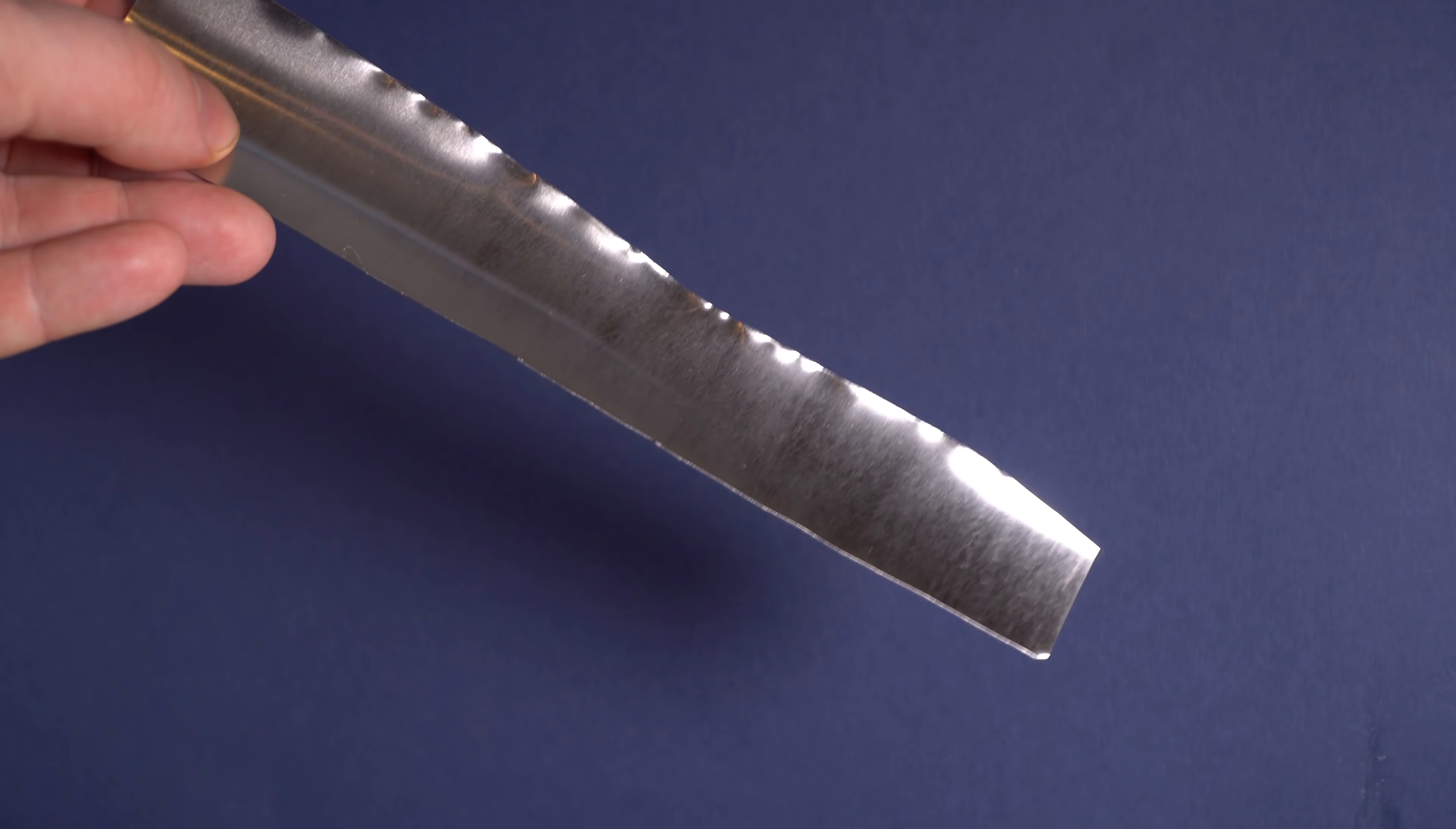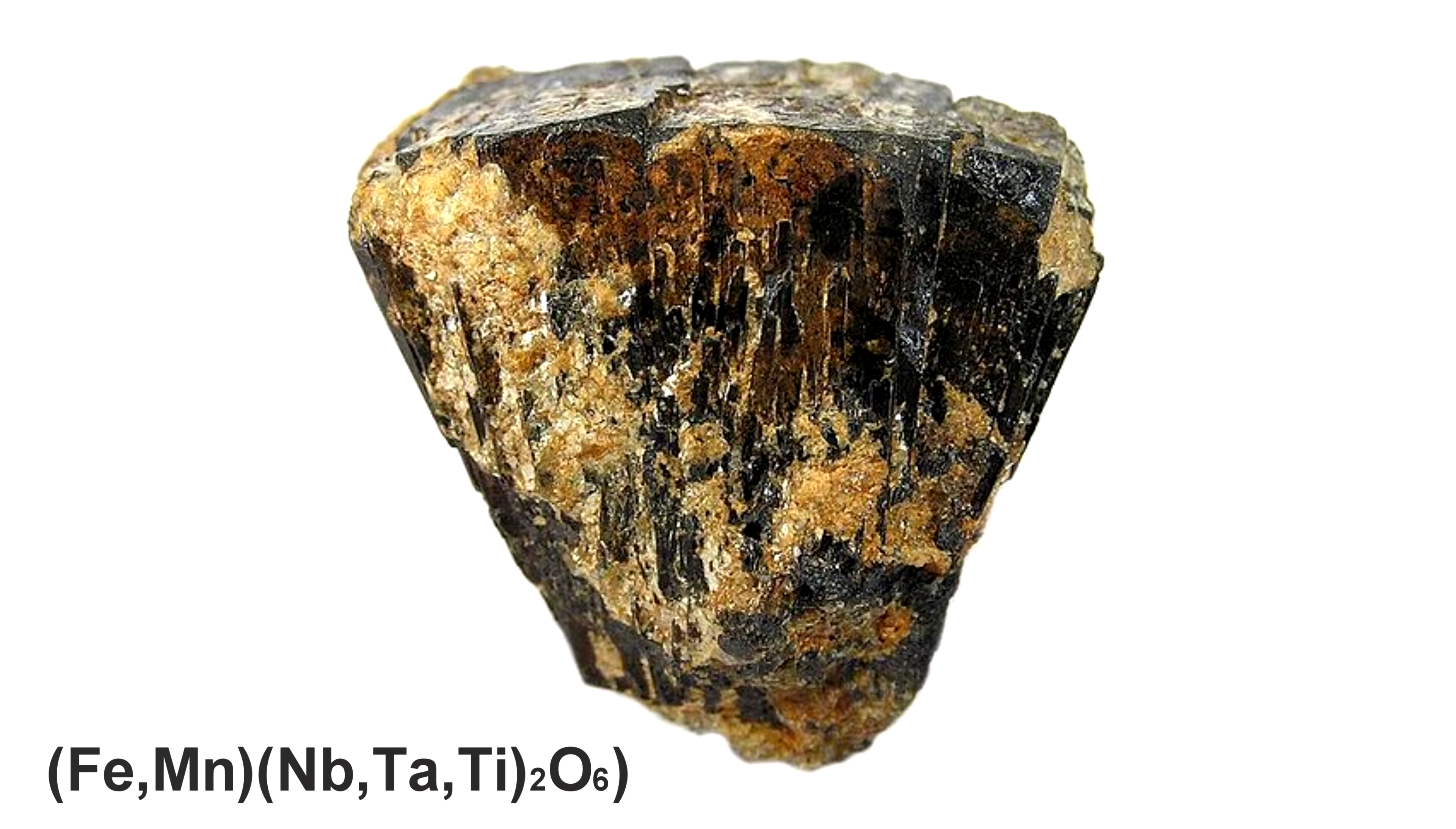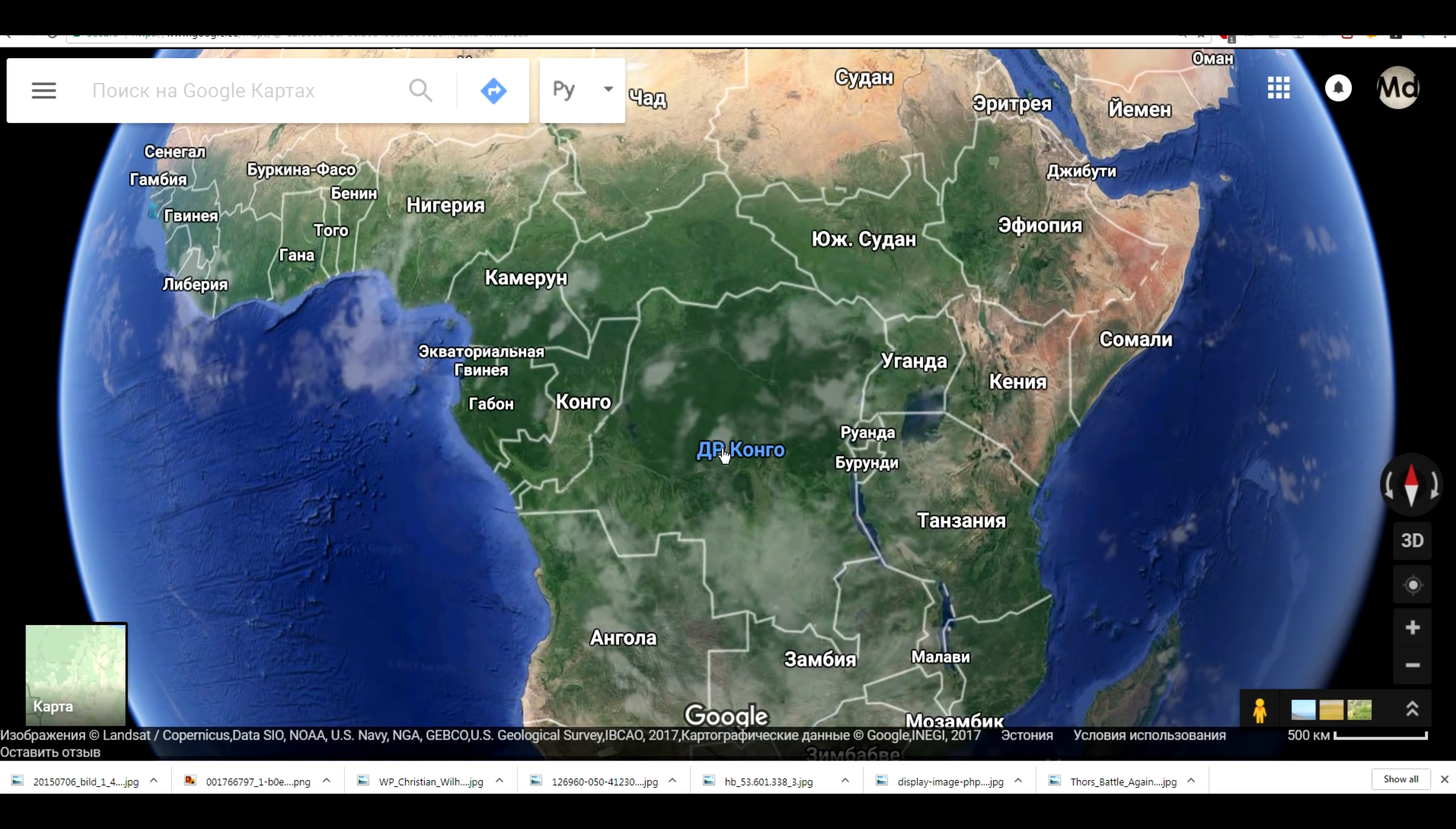Tantalum is very ductile. It's very easy to make wire or foil from it. This metal is extracted from the mineral coltan, the deposits of which are located in Brazil. But especially rich deposits of tantalum ores are found in Central Africa.